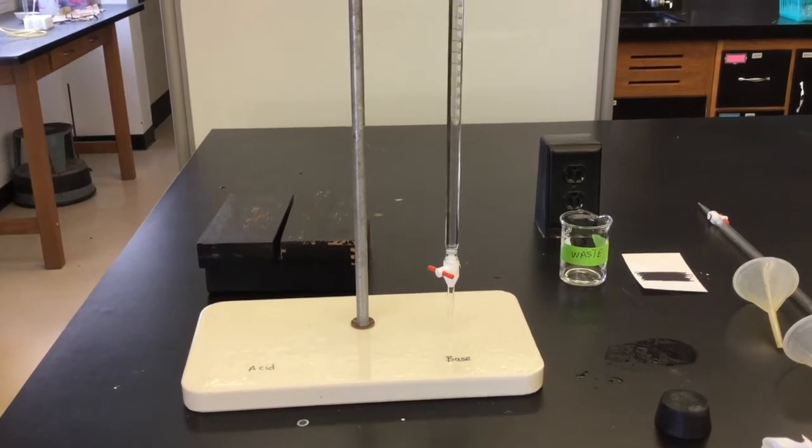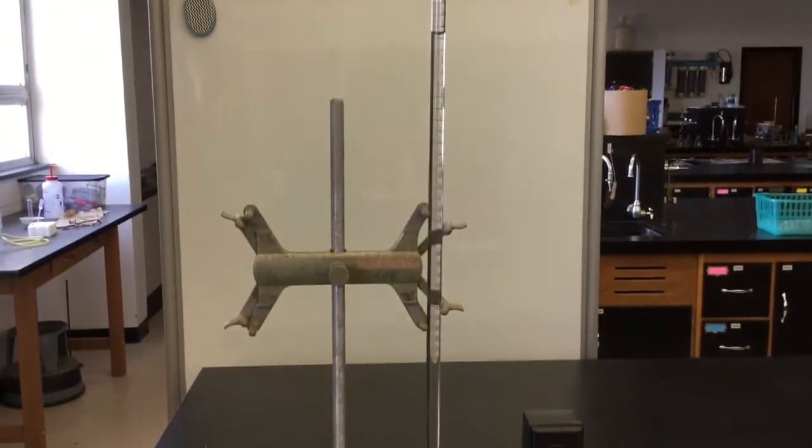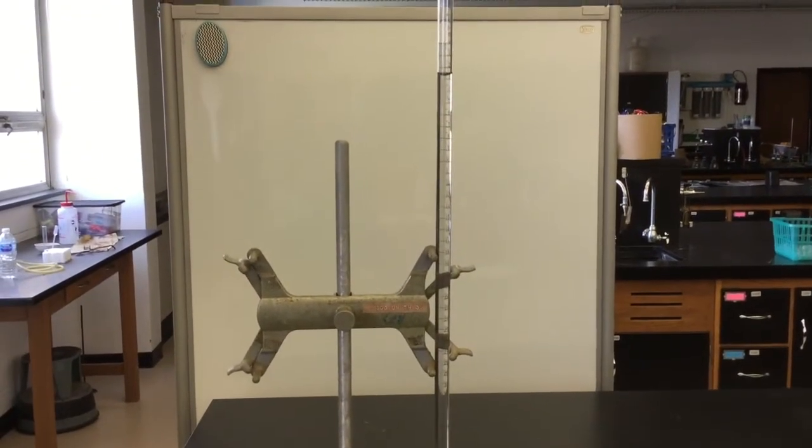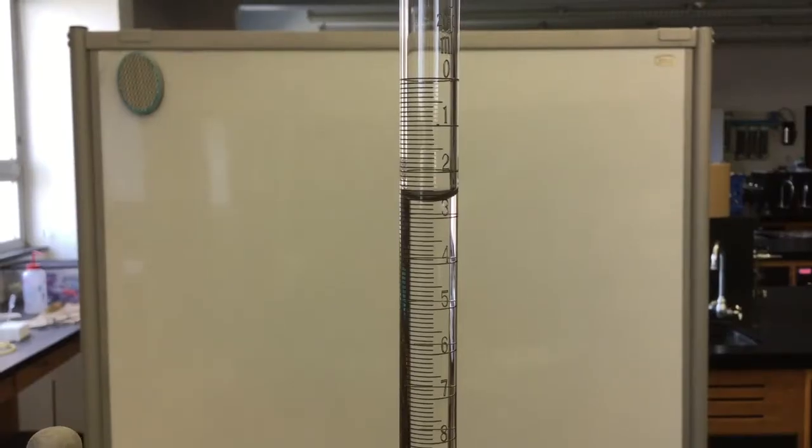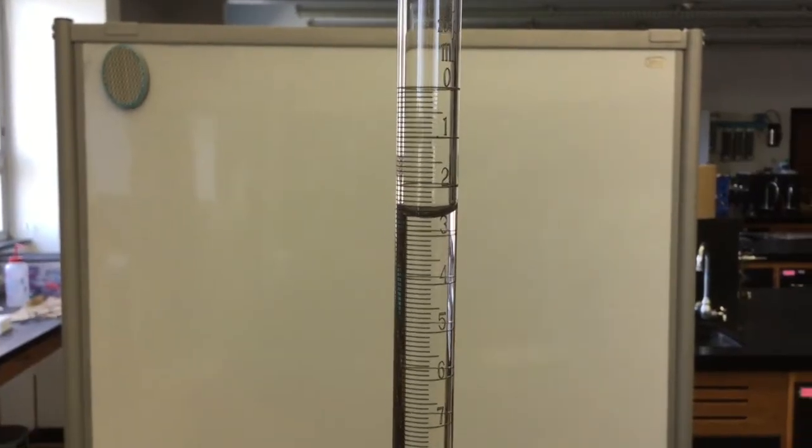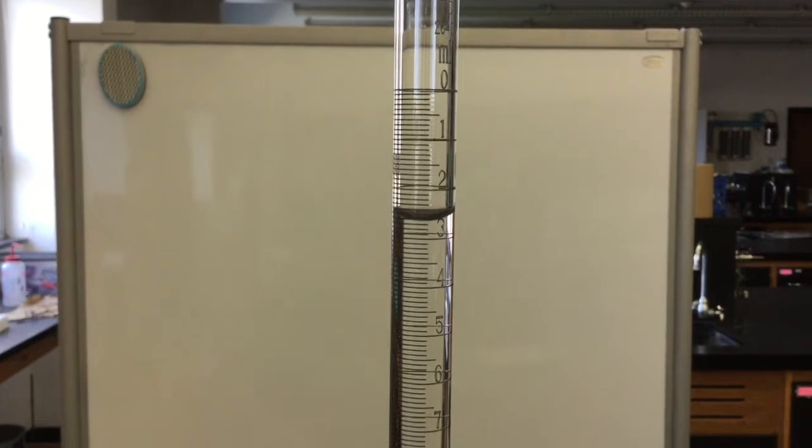Burettes can be difficult to read, so you may need to adjust the height so that the level of the solution inside is at eye level for you. Depending on whether the markings on the burette are black, white, or some other color, you may want to have a background that contrasts so that you can easily read.